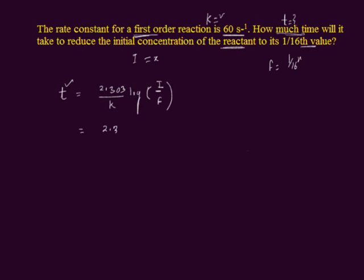2.303 divided by k value is 60 per second, log bracket initial amount, we have assumed it is x, and final amount is 1 upon 16th x.